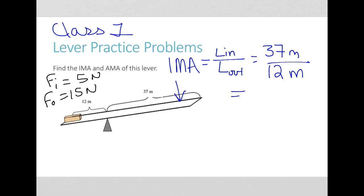So 37 divided by 12 equals 3.08 as the IMA, with no units. To get the actual mechanical advantage, AMA is calculated as force output divided by force input.